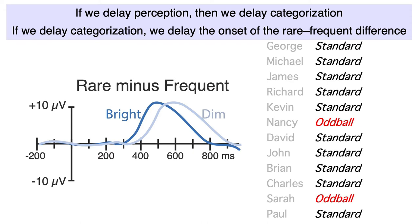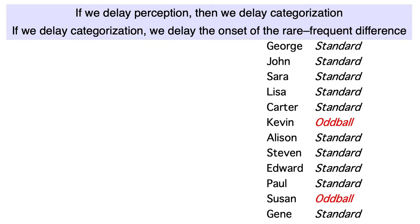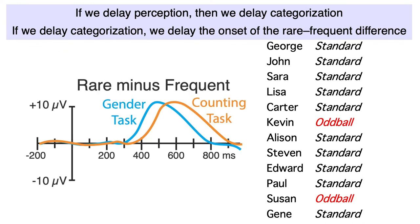We'd also expect to see about a 50 millisecond slowing of response times. If we slow perception, then we slow categorization. If we slow categorization, we slow the response. Or, we could instead try to slow categorization directly. Imagine that the task was to count the letters in each name and press one of two buttons to indicate whether it was an odd number or an even number. If we make odd numbers rare and even numbers frequent, we could make a rare minus frequent difference wave. It would take you longer to count the letters in Nancy than to determine whether Nancy is a male or female name, and that would increase the time needed for the brain to determine whether a given name fell into the rare category or the frequent category, and that would delay the rare minus frequent ERP difference.